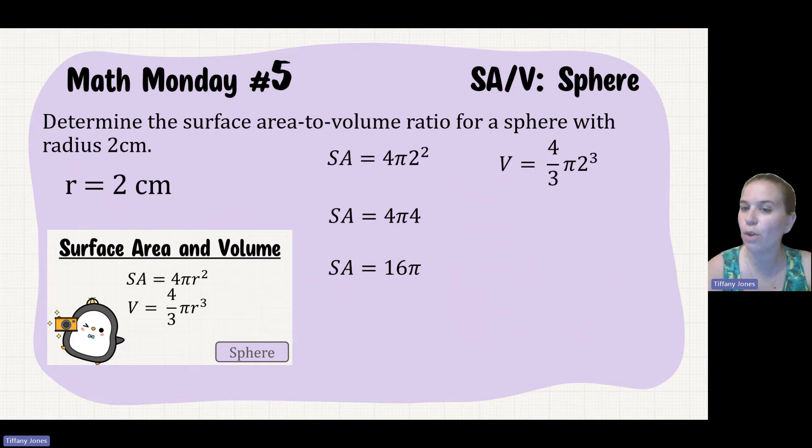For my volume, I'm going to sub that in. So 4/3π, again r being 2, 2 cubed. So 2 cubed is going to give us 8. So 4/3π times 8 is going to then give us 32/3.